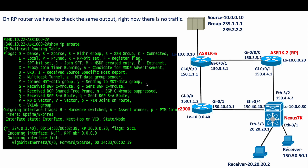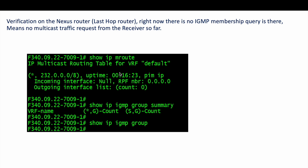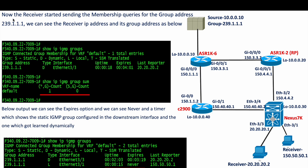We go into the Nexus 7K where the receivers are connected. There also we don't see any entries, and 'show ip igmp groups summary' shows nothing because there is no traffic from the receiver side. Now the receivers start sending membership reports for group address 239.1.1.1. We can now see entries on the Nexus with 'show ip igmp groups'. We can see a statically configured entry from 150.50.50.1 showing 'never' expire, and the 20.20.20.2 receiver entry coming in dynamically — that is why it shows type 'dynamic' with an expiry timer.